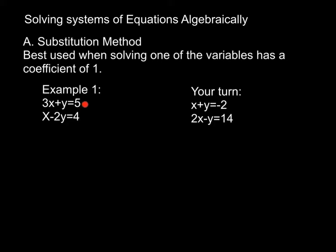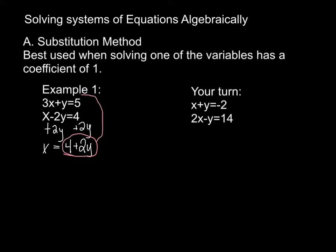Looking at these two equations, I have two options: solve for the y in the first equation or solve for the x in the second equation. Let's solve for x in the second equation. When I do that, I'm going to add 2y to both sides, which tells me that x is equivalent to 4 plus 2y. Now this is the substitution method, so I'm going to take this expression 4 plus 2y and substitute it into the first equation.